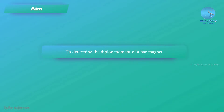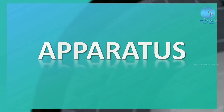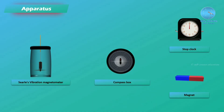The apparatus required to conduct this experiment includes: a Cells Vibration Magnetometer, a compass box, a stop clock, and a bar magnet.